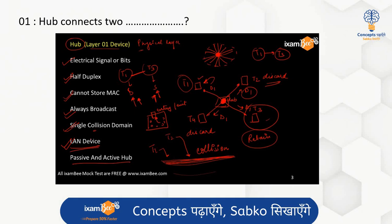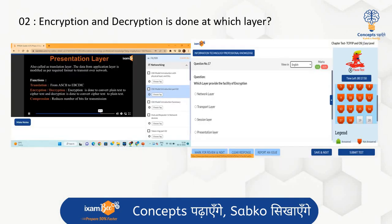The second question was: encryption and decryption are done at which layer? In our OSI model discussion on the Presentation Layer, we have written exactly where encryption and decryption are used. The question asks which layer provides the facility of encryption — this is an important question about layer responsibilities, and it is covered in the course.